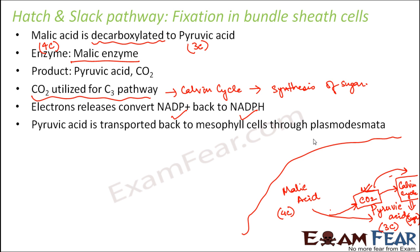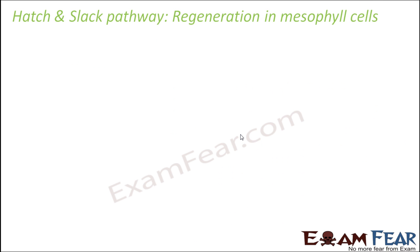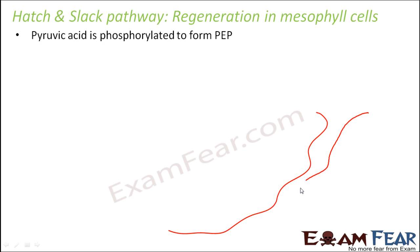The pyruvic acid produced in the bundle sheath cells is transported back to the mesophyll cells through the plasmodesmata. The purpose of the entire cycle entering the bundle sheath cell is to provide CO2 and initiate the Calvin cycle.